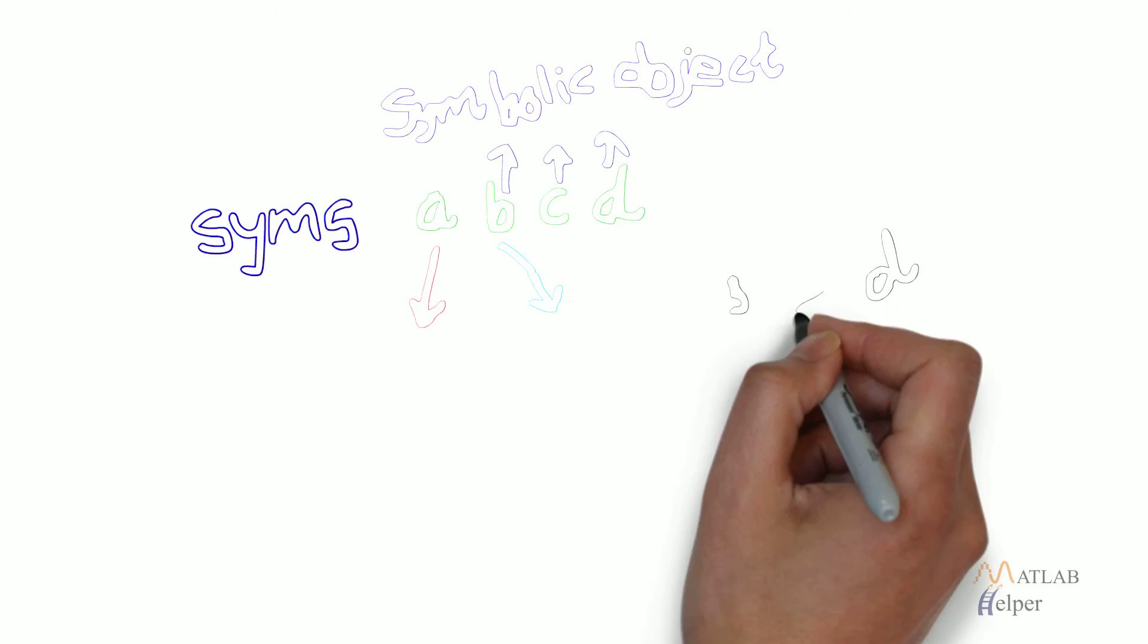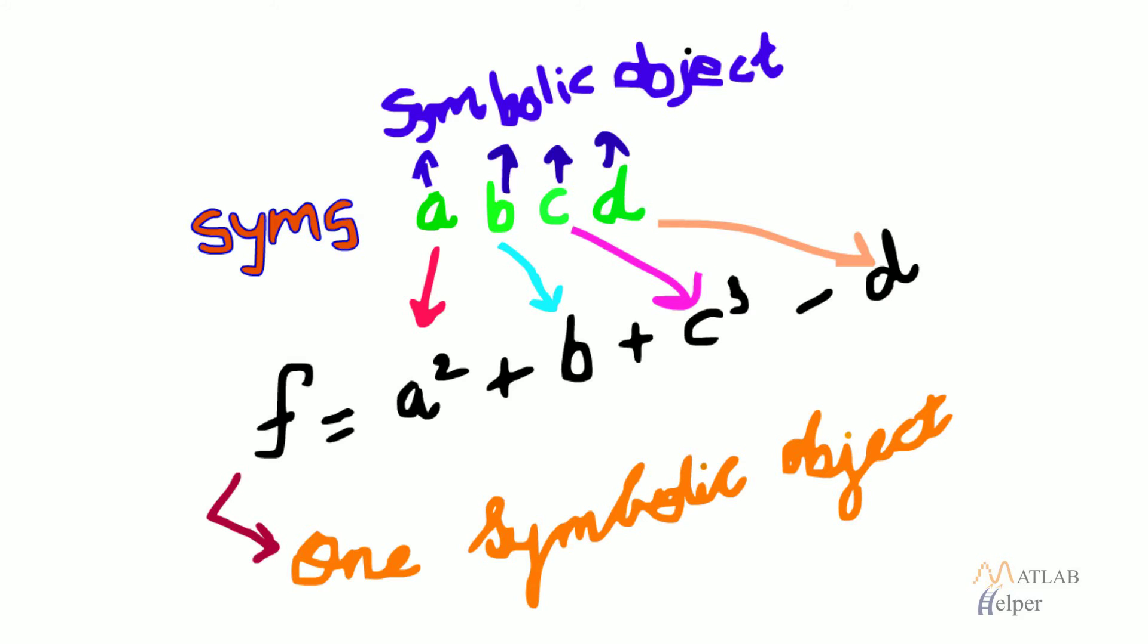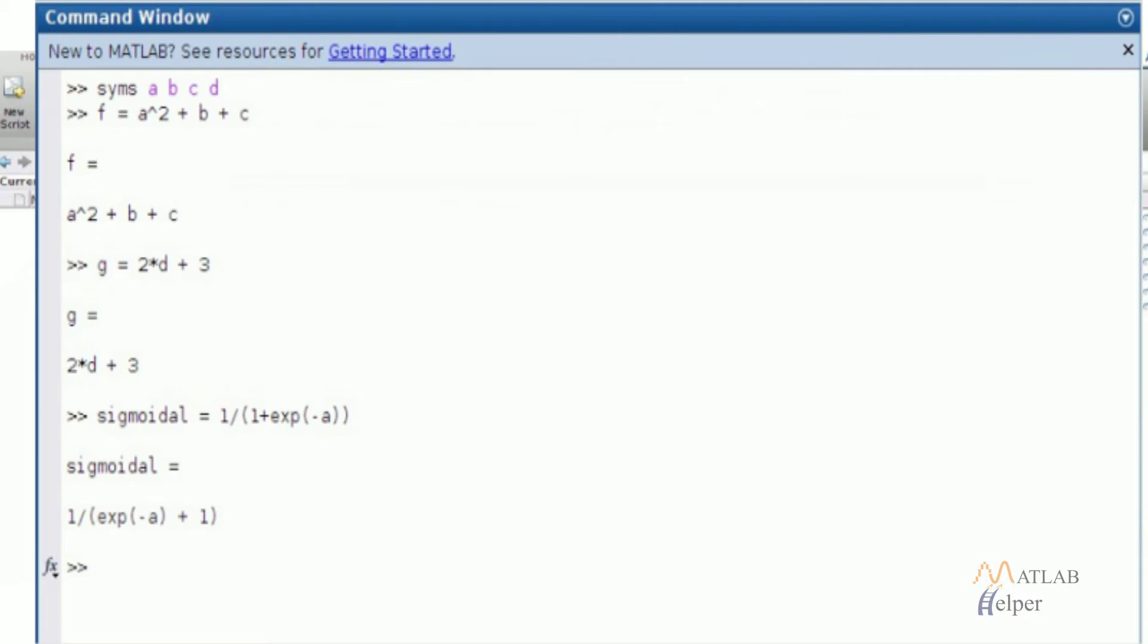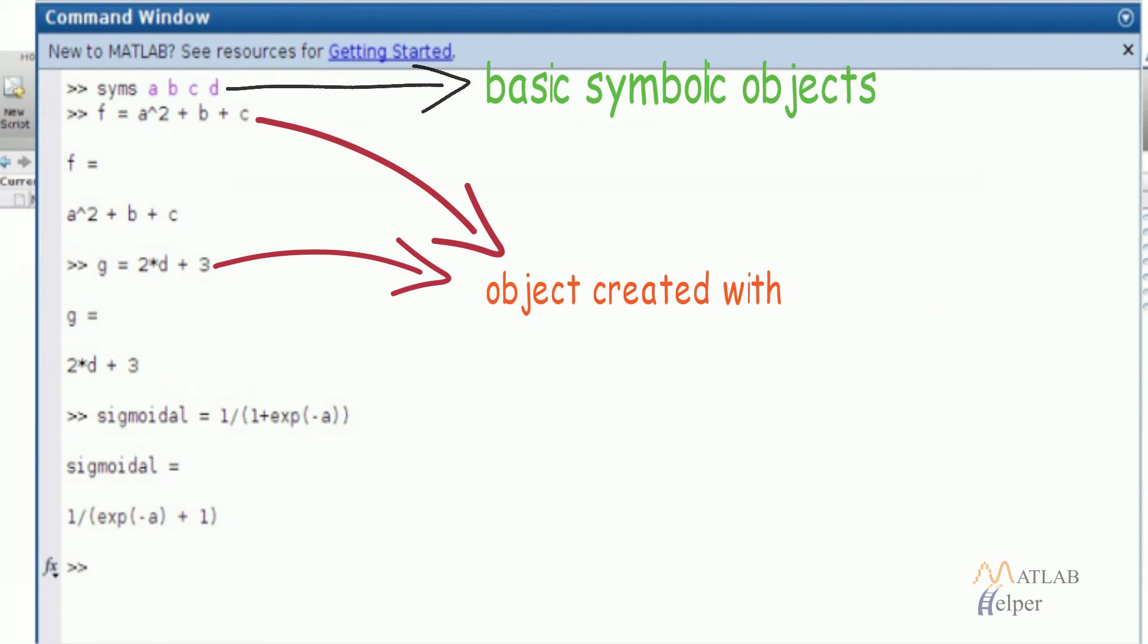A symbolic object can also be created from expression formed out of other symbolic objects. We can see in the picture that different expressions can be framed from already existing symbolic objects and new objects can be created.